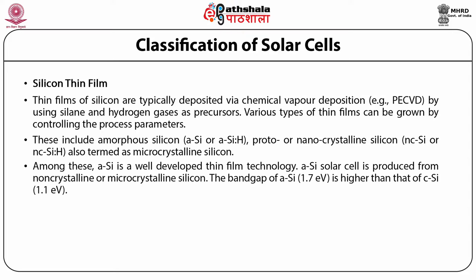Among these, a-Si is a well-developed thin film technology. a-Si solar cells are produced from non-crystalline or microcrystalline silicon. The band gap of a-Si, that is 1.7 eV, is higher than that of C-silicon, which is 1.1 eV. Therefore, the visible portion of solar radiation is more strongly absorbed by a-Si than the infrared portion, which has higher power density. Thin film a-Si solar cells are produced by depositing a thin silicon layer on a glass substrate via PECVD.